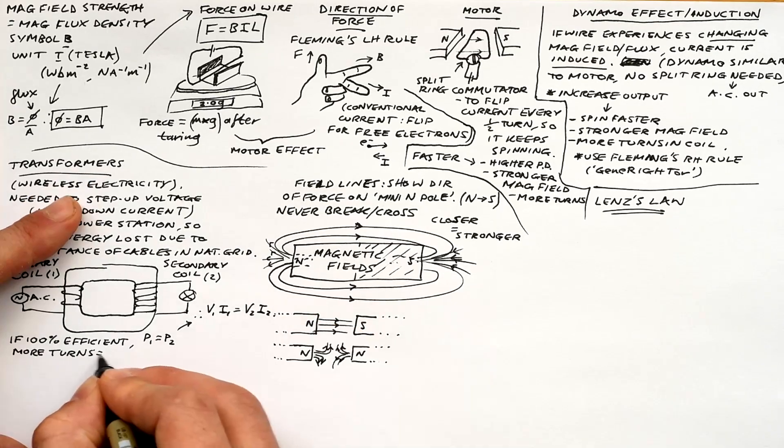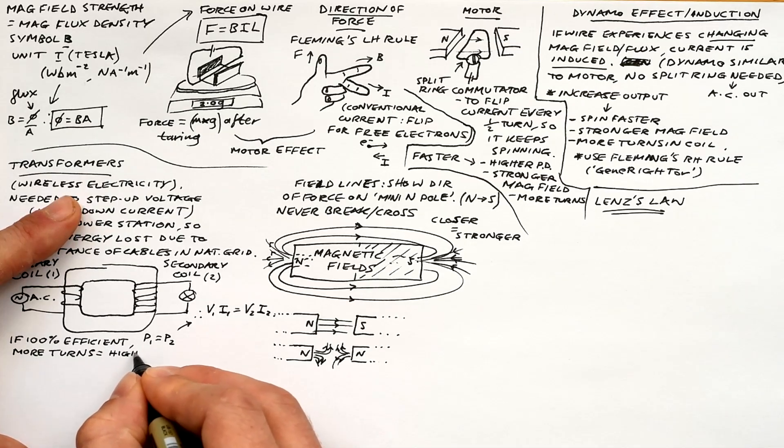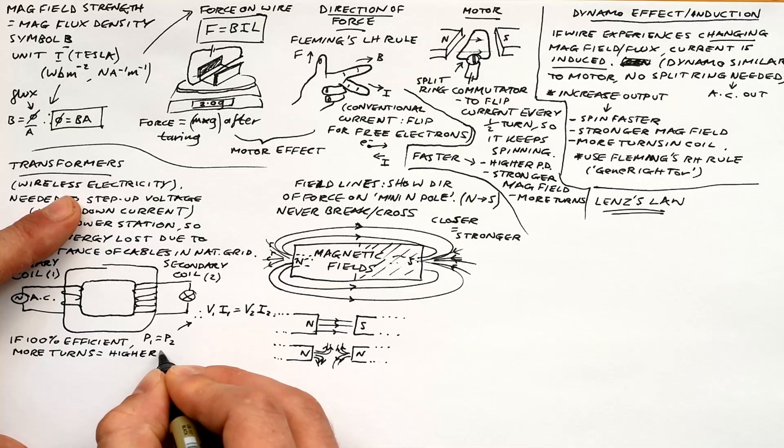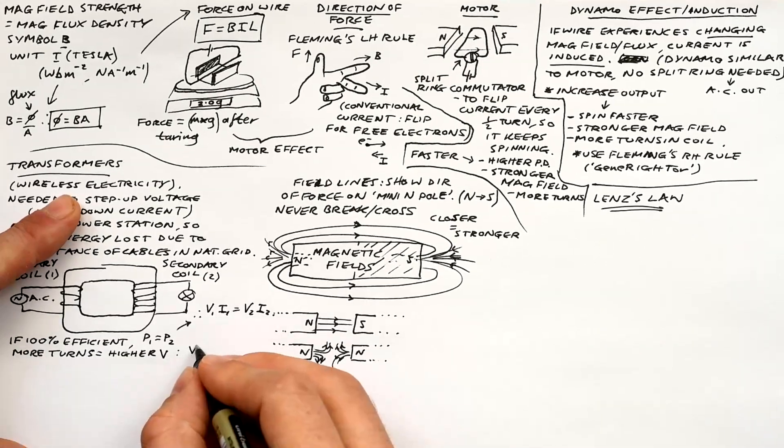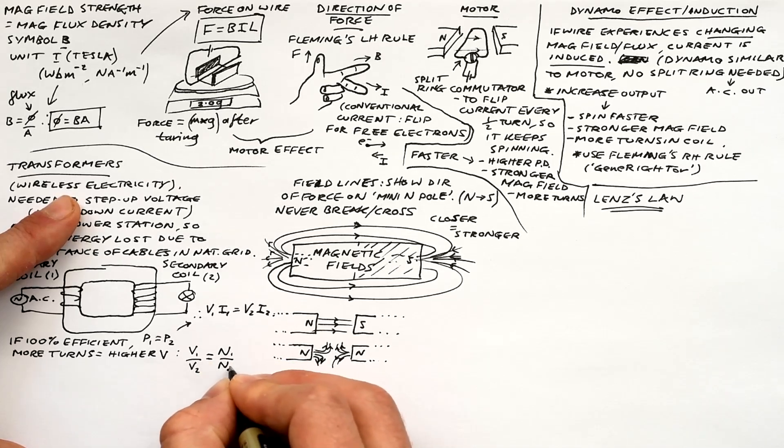And this is a step up transformer because we can see that the secondary coil has twice the number of turns than the primary coil. So we should have double the voltage out and therefore half the current. The more turns we have, the higher voltage. So therefore we can say the ratio of the voltages is equal to the ratio of the number of turns. V1 over V2 equals N1 over N2.